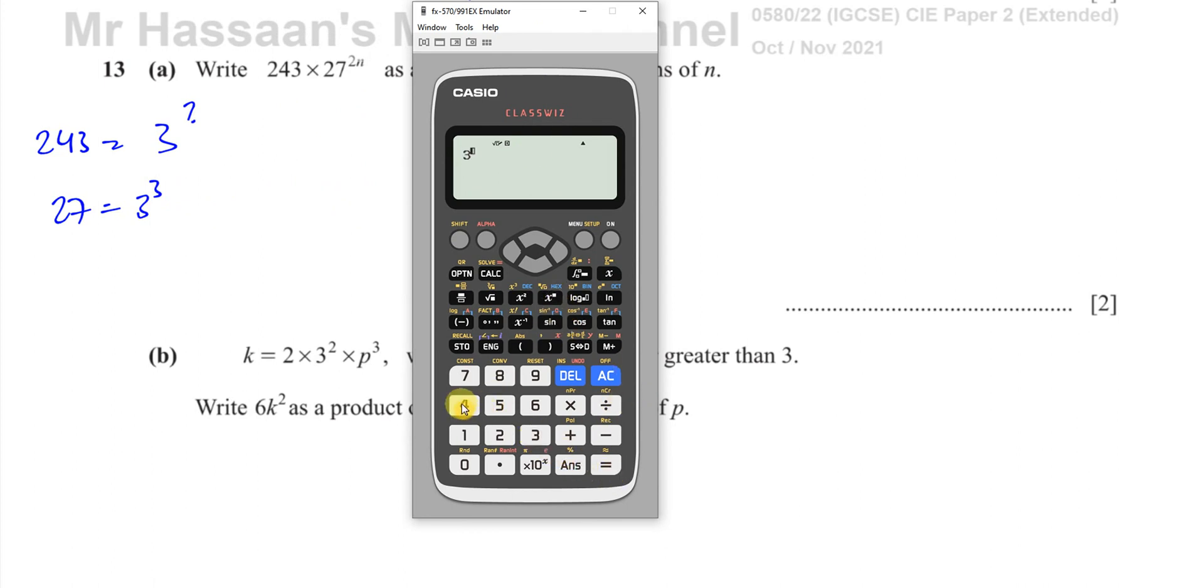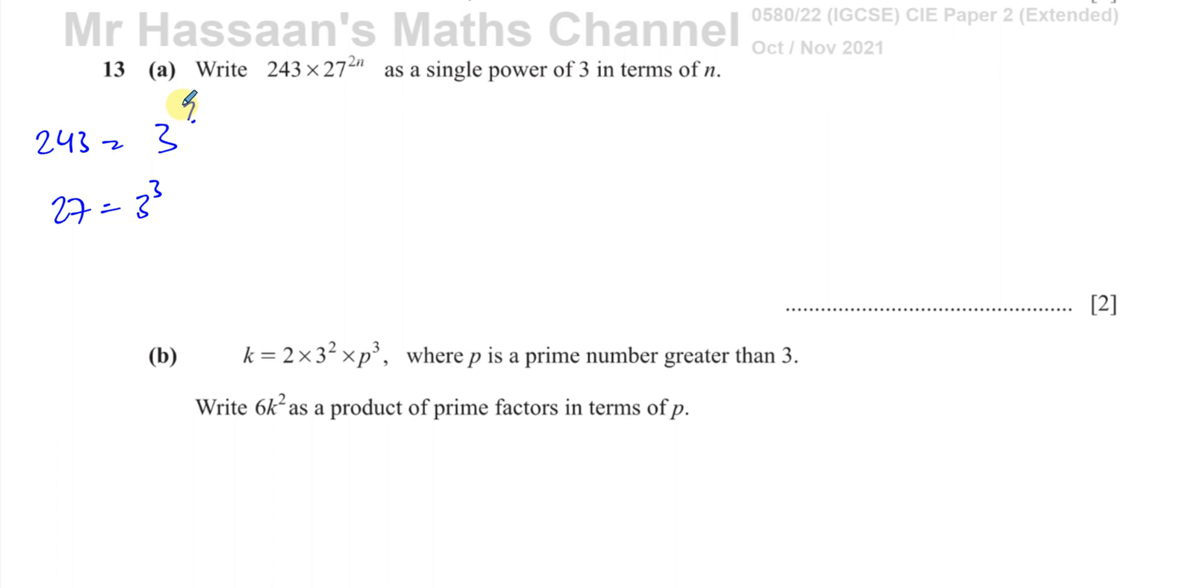So we can just simply do some trial and error. For example, 3 to the power of 4, I know that's 81. So let's change that to 5, 3 to the power of 5, 243. That's fine. So 3 to the power of 5.